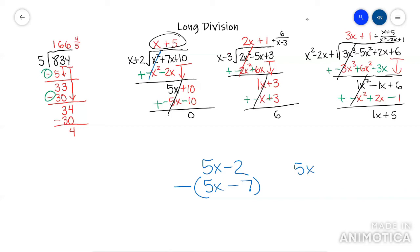Let me rewrite it. 5X minus 2. And then under it, it's going to be negative 5X and then plus 7. And then instead of thinking like minus negative 7, I can just look at this and combine.